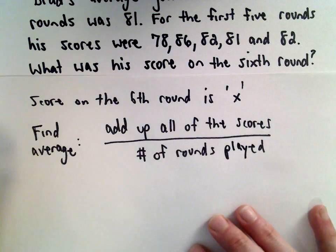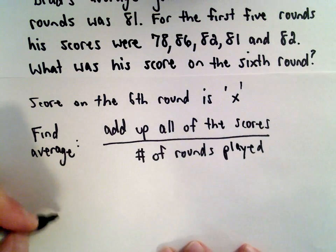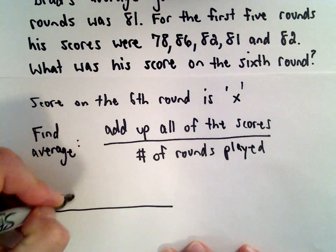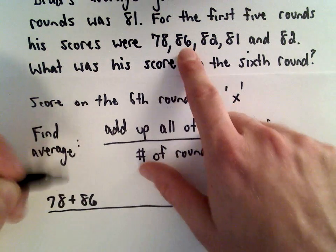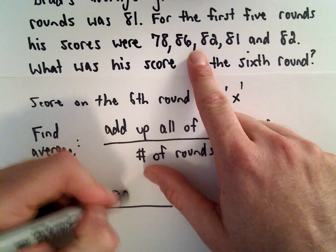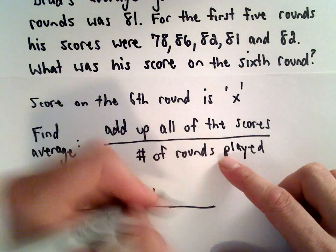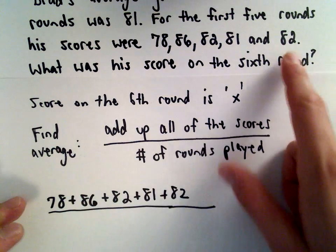Let's add up all of the scores. That's going to go in the numerator of our fraction. We've got 78 plus 86 plus 82 plus 81 plus another 82.